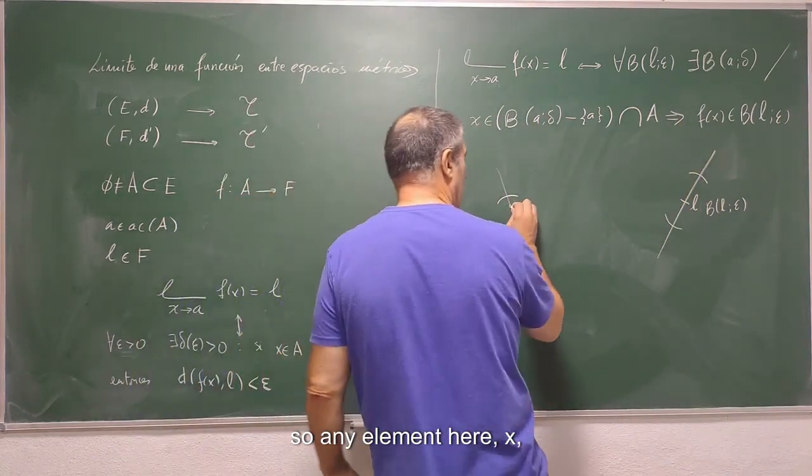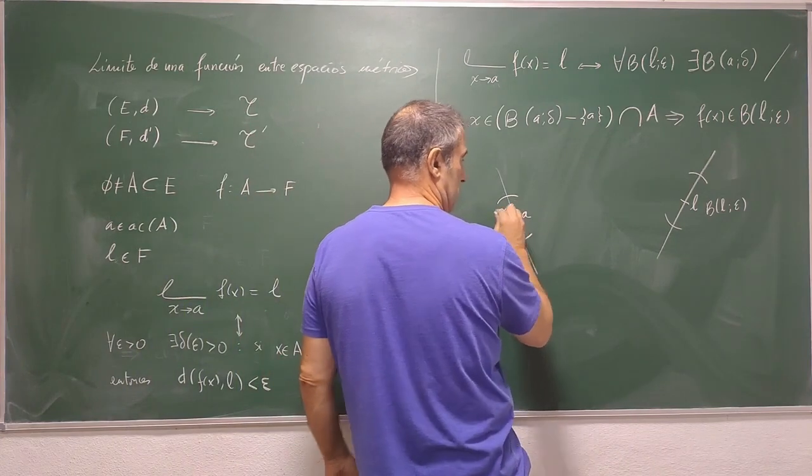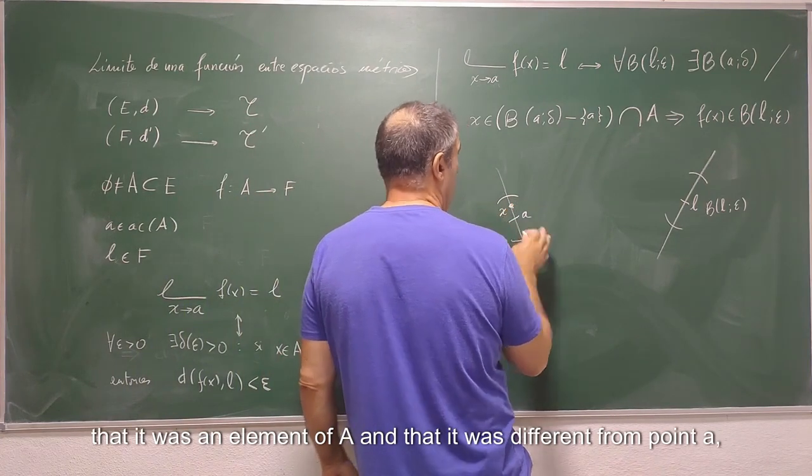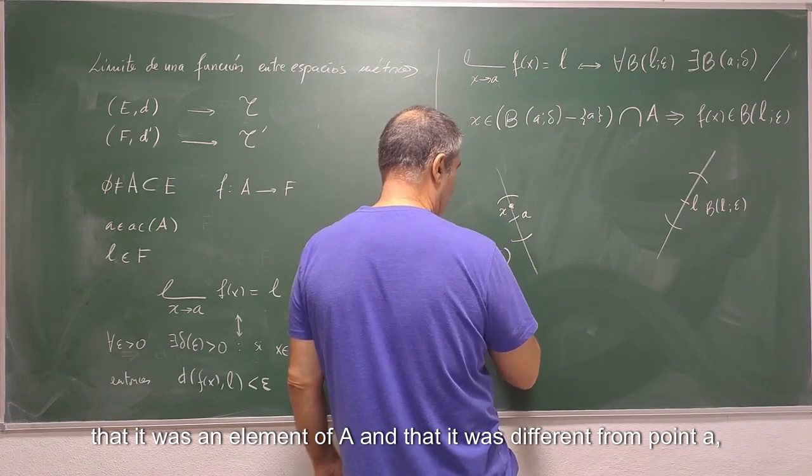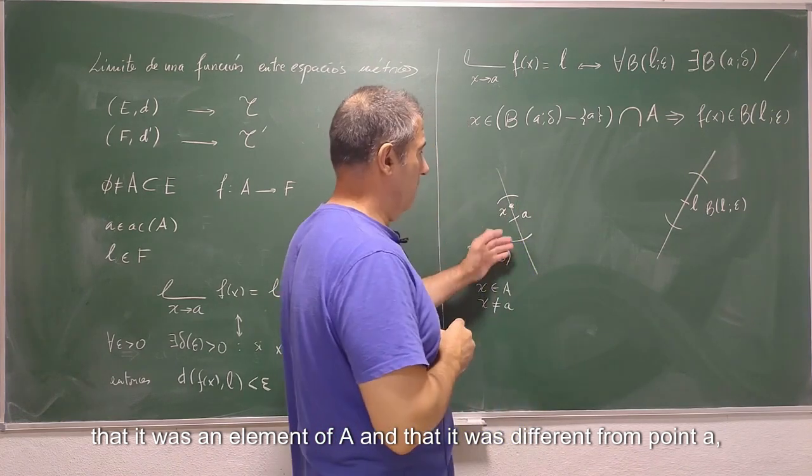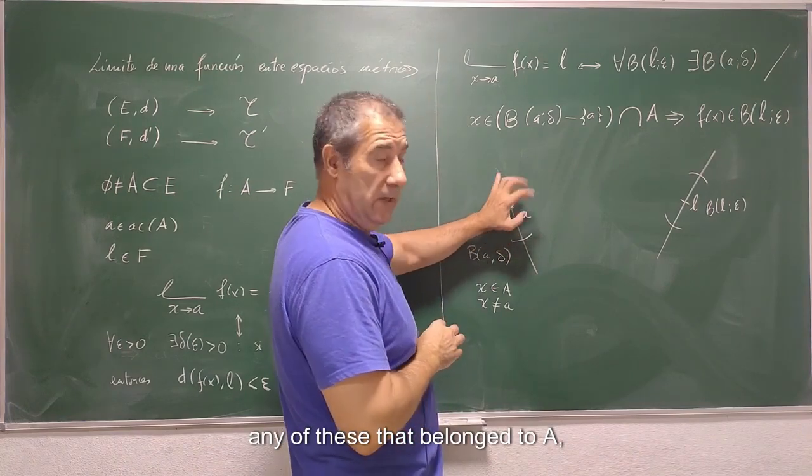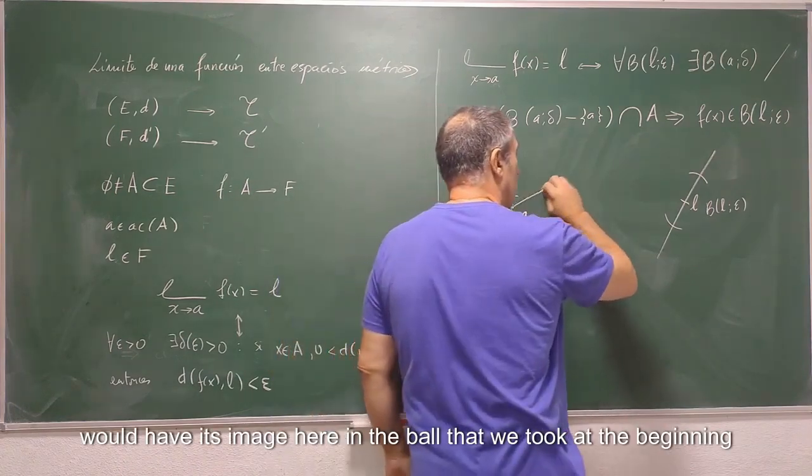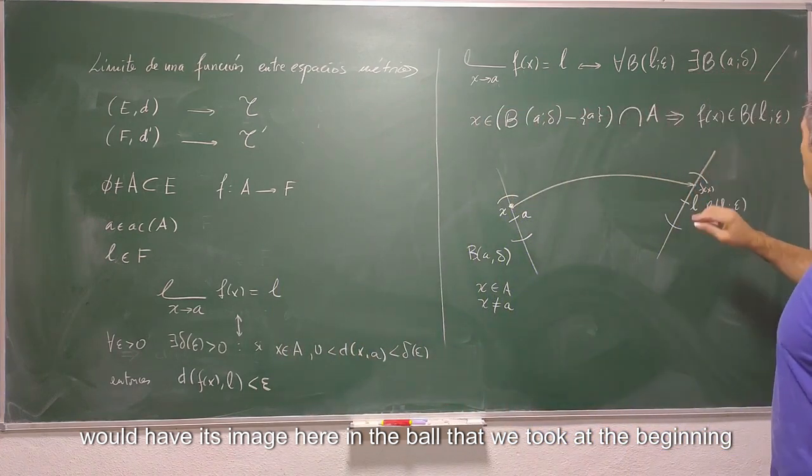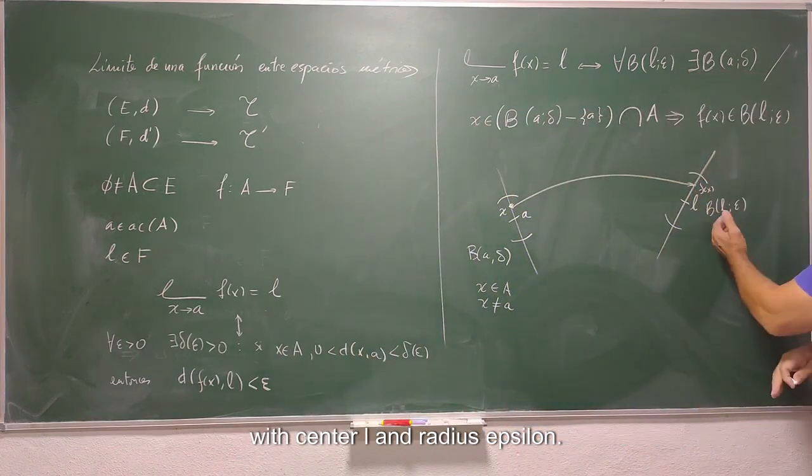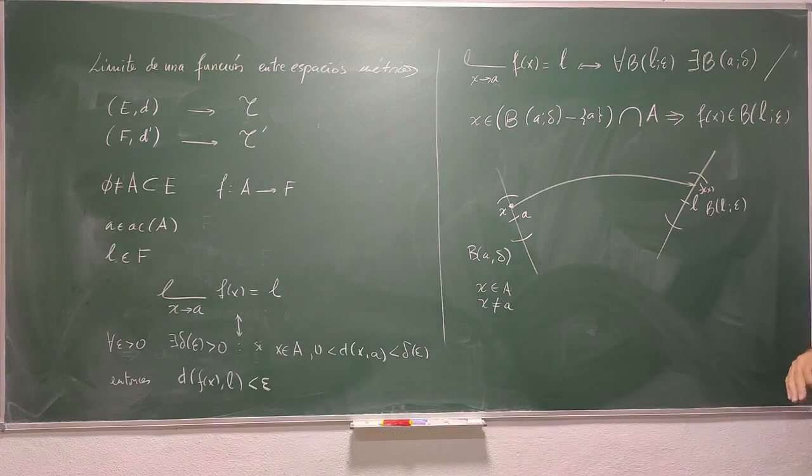So any element here x that it was an element of A and that it was different from point a, any of these that belong to A would have its image here in the ball that we took at the beginning with center L and radius epsilon. Well, that's the idea.